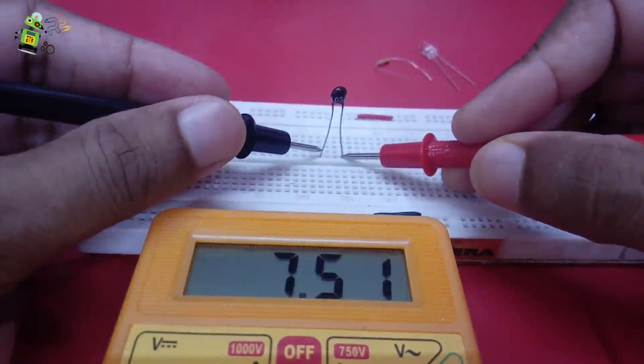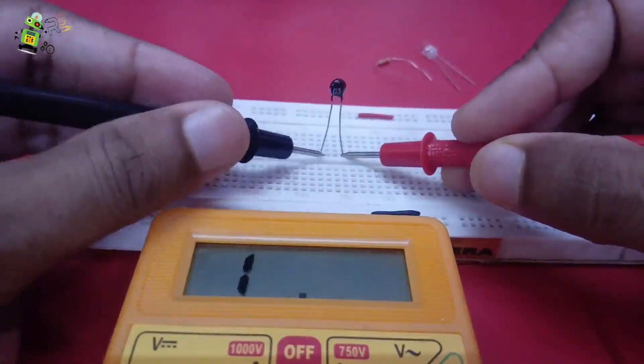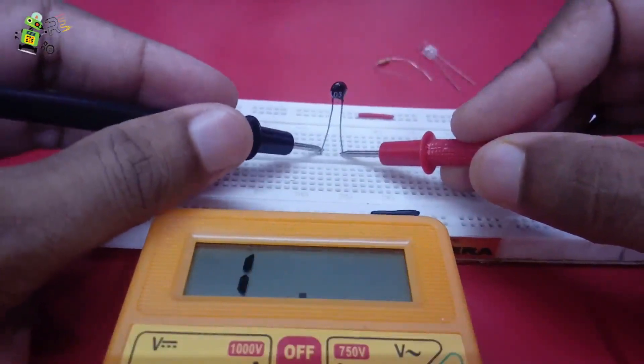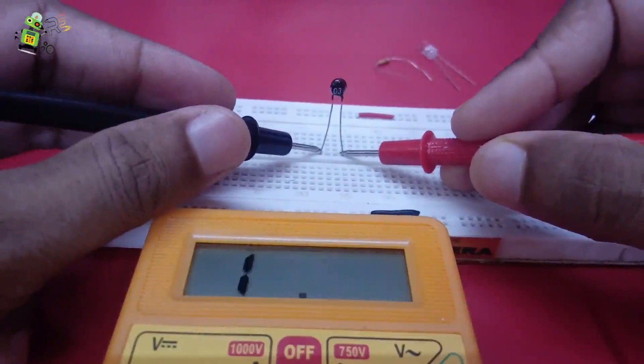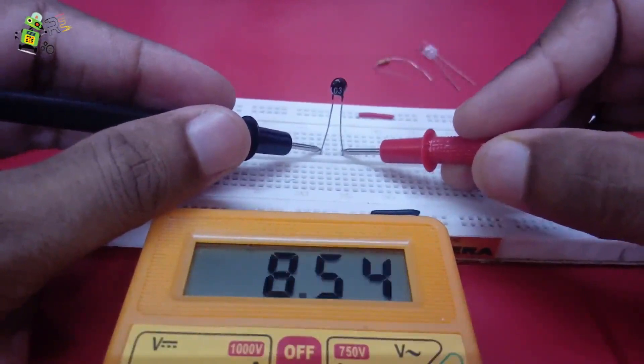So what we are getting is a 7.50 kilohm value. Okay, it's a kilohm. Because the temperature is a little bit more now, so its value is reduced.